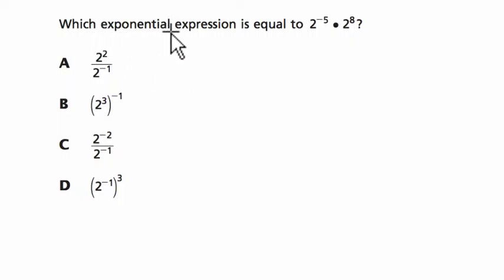Alright, we want to know which exponential expression out of these, A, B, C, and D, is equal to 2 to the negative 5th, and this dot is multiplication times 2 to the 8.